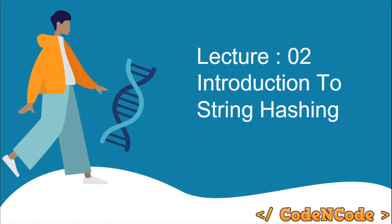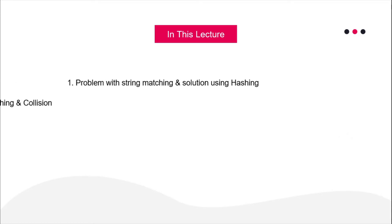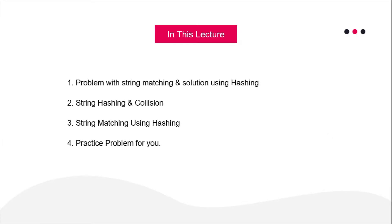Hello guys, this is Code and Code, and this is the second lecture of the string theory series. In this lecture we are going to study about string hashing: what are the important aspects of that, how it is done, and where it is used. We'll be focusing first on what is the problem with string matching — basically you are given two strings and you want to compare whether they are equal or not — and the solution using string hashing.